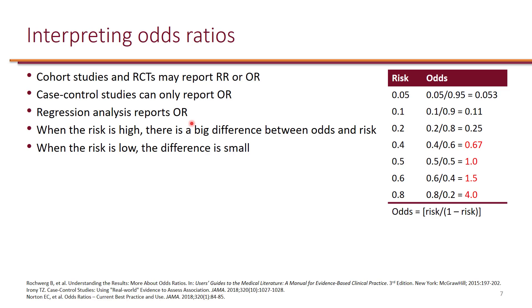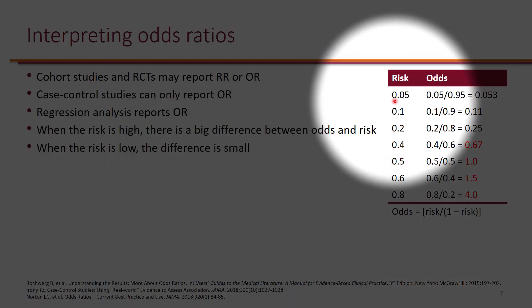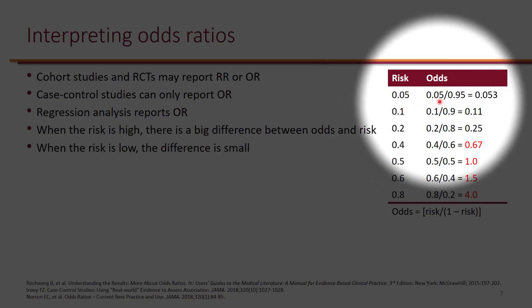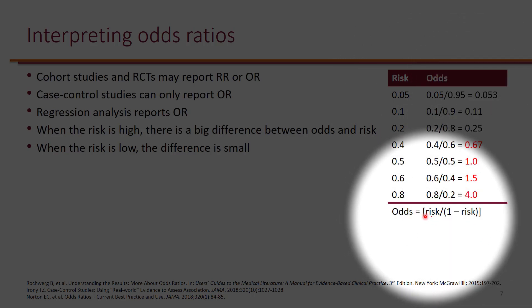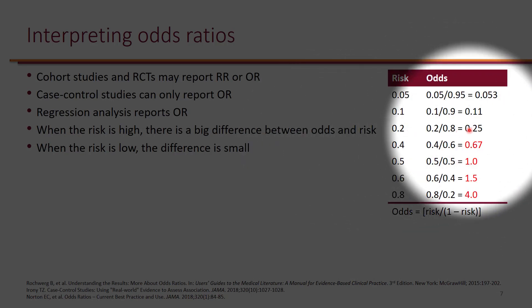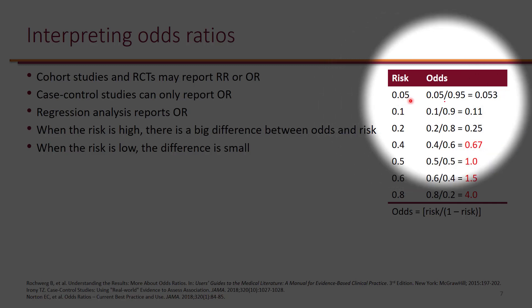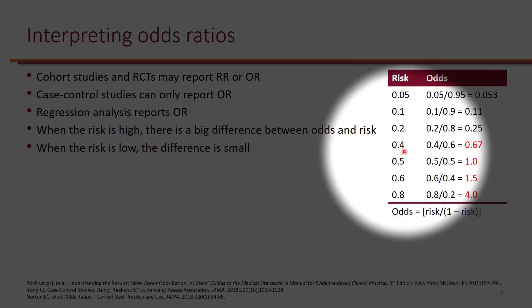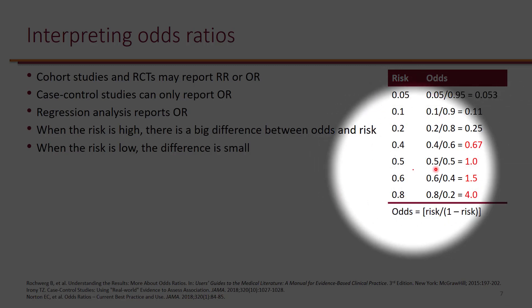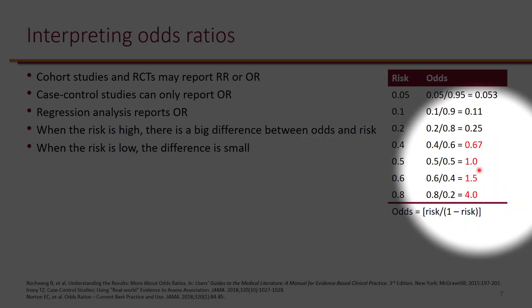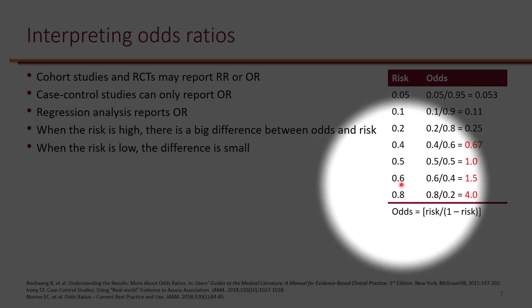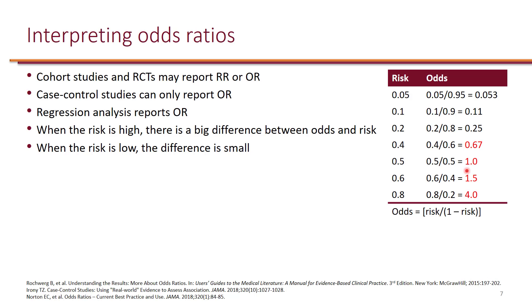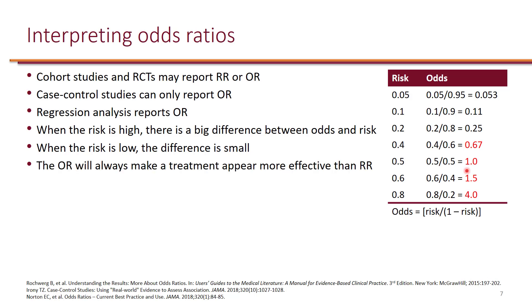Let's compare odds and risk. When the risk is high, there is a big difference between odds and risk; when the risk is low, the difference is small. For example, when risk is 0.05, the odds are 0.053 — very close. But as risk increases past 0.5, the gap becomes huge: a risk of 0.5 corresponds to odds of 1.0, and a risk of 0.8 corresponds to odds of 4.0. The key takeaway is that the odds ratio will always make a treatment appear more effective than relative risk.